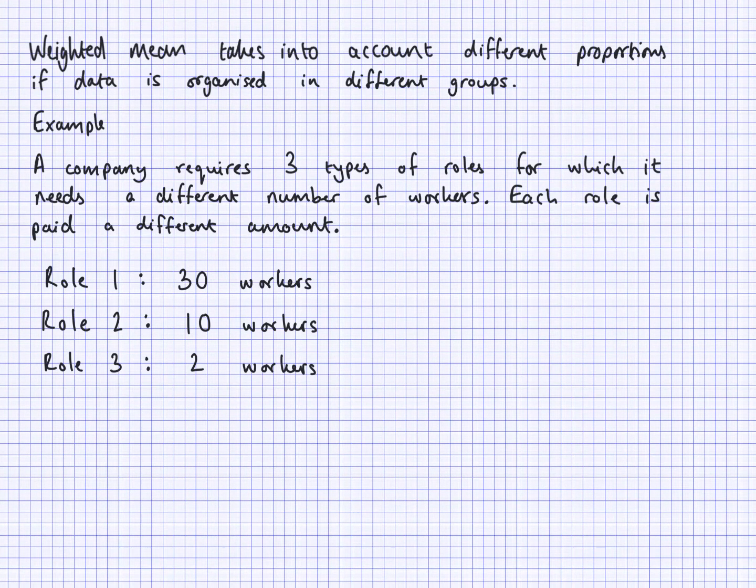Here I have another example. A company requires three types of roles for which it needs a different number of workers. Each role is paid a different amount. I'm just saying role 1, role 2, and role 3. Role 1 requires 30 workers, role 2 requires 10 workers, and role 3 has 2 workers.